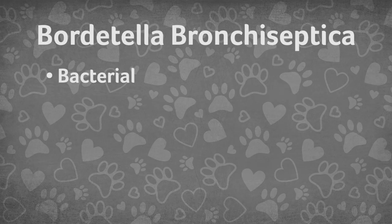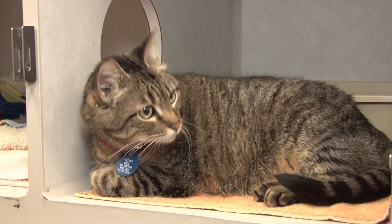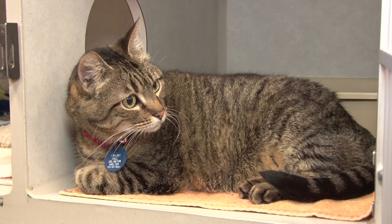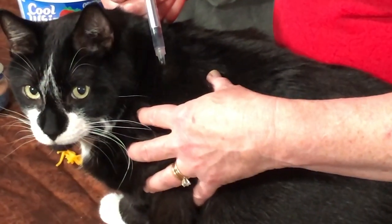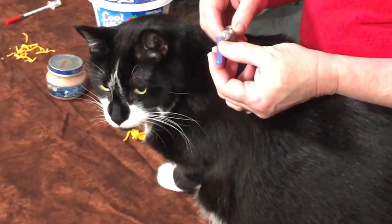Bordetella is the third main cause of URIs, especially in young kittens and rescues where cats are housed together. Bordetella bronchiseptica is a bacterial issue and it can be fatal. It can pass back and forth from dogs to cats. In catteries and rescues where Bordetella has been diagnosed, early vaccination will help control the persistent URI issues. Once vaccination is initiated, treatment costs are usually minimal and most pneumonia is prevented.